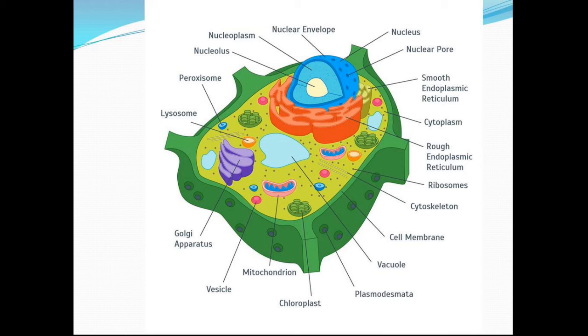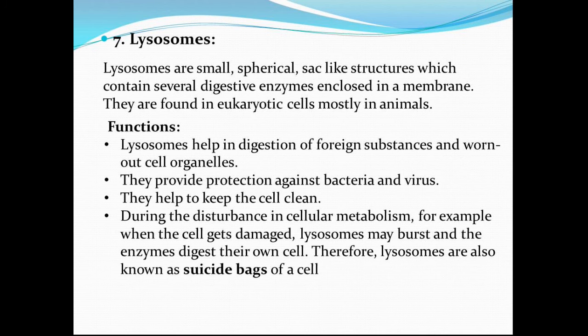Coming on to the structure and the functions of all 3. Lysosomes are small spherical sac-like structures which contain several digestive enzymes enclosed in a membrane. They are found in eukaryotic cells, mostly in animals. These are electron microscopic vesicular structures found in the cytoplasm of all eukaryotic animal cells except mammalian RBCs. Each lysosome has an outer limiting membrane and an inner highly heterogeneous mixture of digestive enzymes synthesized by rough endoplasmic reticulum, called hydrolases, which operate at acidic pH of 5.